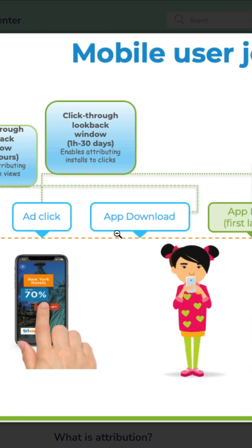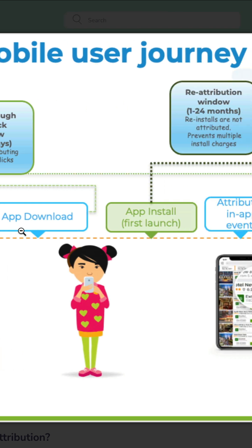Then they go to the App Store, and the App Store is effectively like a black box. Users arrive to it, and there's not a lot of connection between the activity that happened before they arrived — clicking the ad — and then what might happen after, which is installing the app.